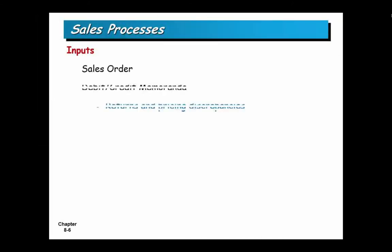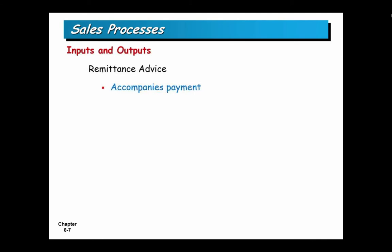Some of the inputs to the sales process: the order drives it — you get an order in some form. You also have debit and credit memoranda; when there's a problem you need to reverse out a sale or part of a sale because it's priced wrong. A remittance advice is counted as both an input and an output. It's the piece you rip off the bottom of a credit card bill and send back with your check to identify your payment — a turnaround document.